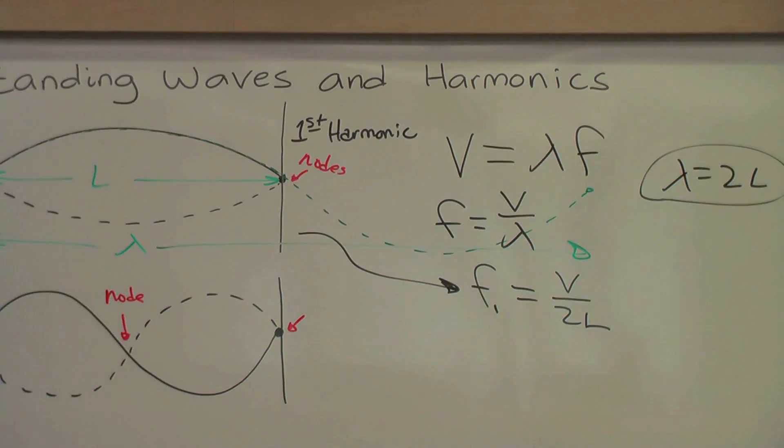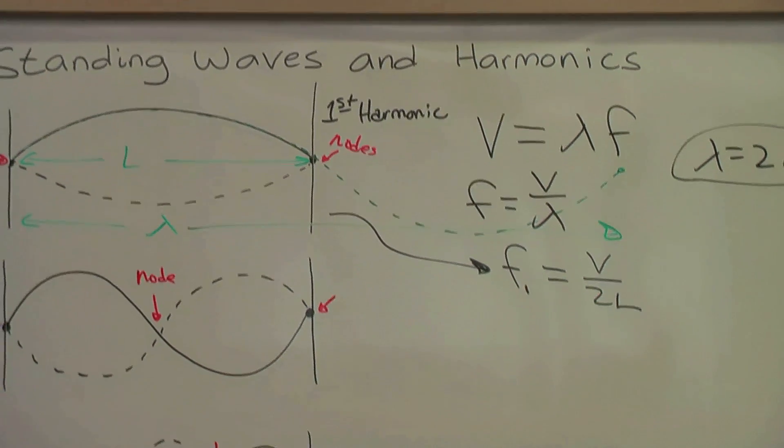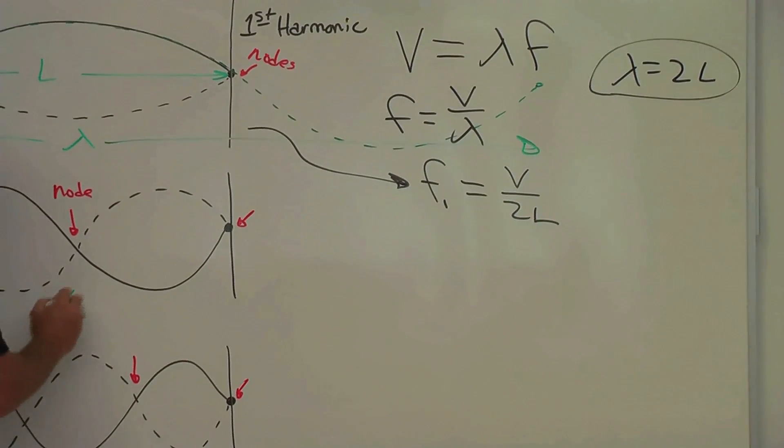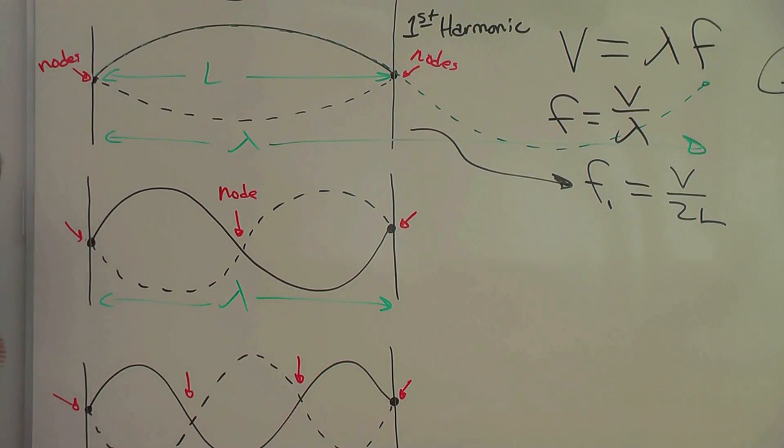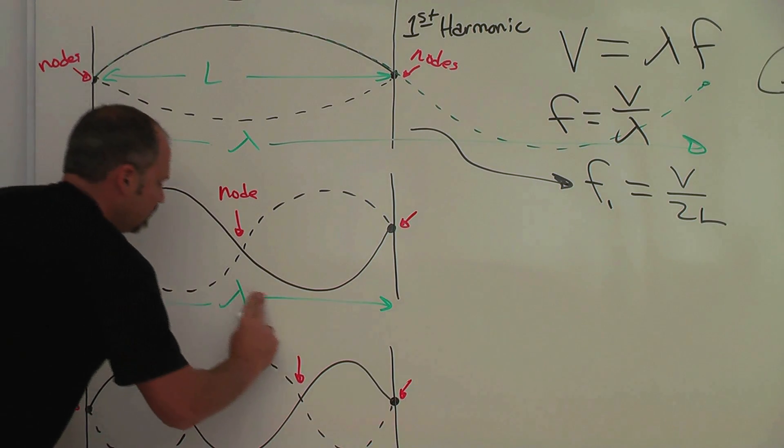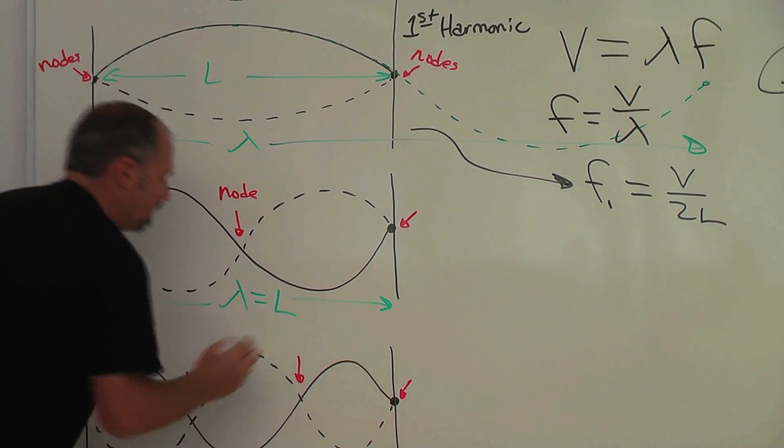Let's attack this guy now. We can see that the wavelength extends from here to there. So we have up, down, that's one wavelength. So here, the wavelength equals the length of the string.